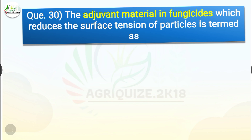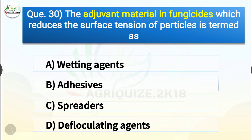Question number thirty: The adjuvant materials in fungicides which reduce the surface tension of particles are termed as dash. The options are wetting agents, adhesives, spreaders, or deflocculating agents. The correct answer is option A, wetting agents. The adjuvant materials in fungicides which reduce the surface tension of particles are termed as wetting agents.